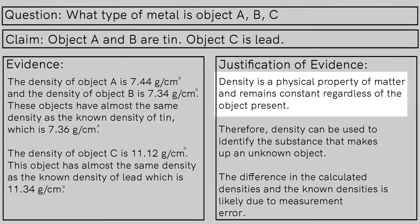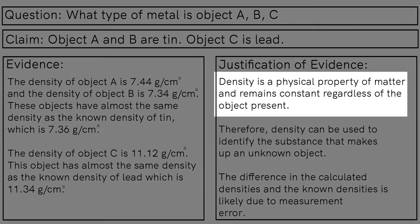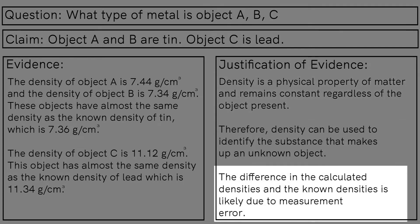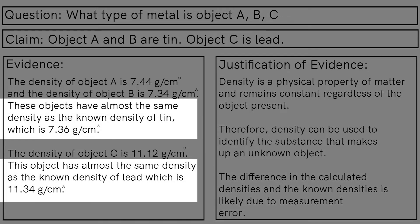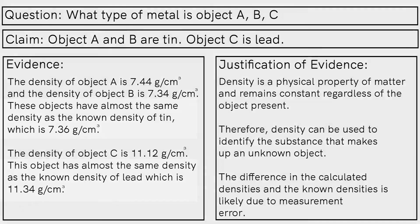Now notice how the justification talks about the core ideas around density as well as making an assumption about why the calculated values are different than the exact published values. Also, if we look at their evidence, there's a comparison that is beginning to be an interpretation as well.